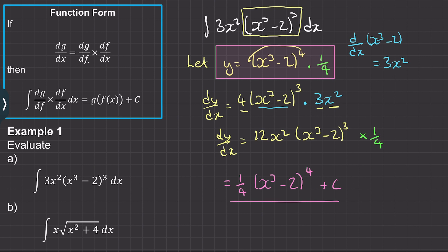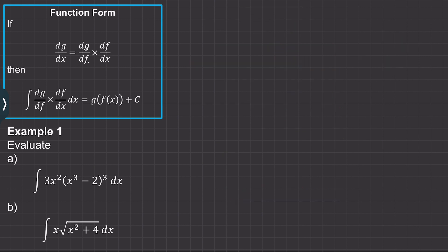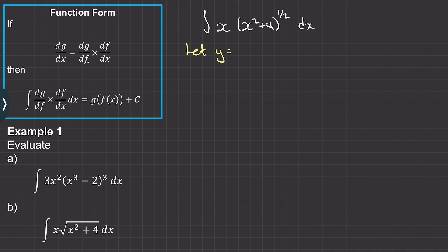Let's move on to question b. We need to write the square root as a power, so the integral becomes ∫ x(x² + 4)^(1/2) dx. We need to see how to get the x term — differentiating x² gives 2x, which provides our x term. So we say let y equal (x² + 4)^(3/2), adding 1 to the power so that when we differentiate we get back the half.